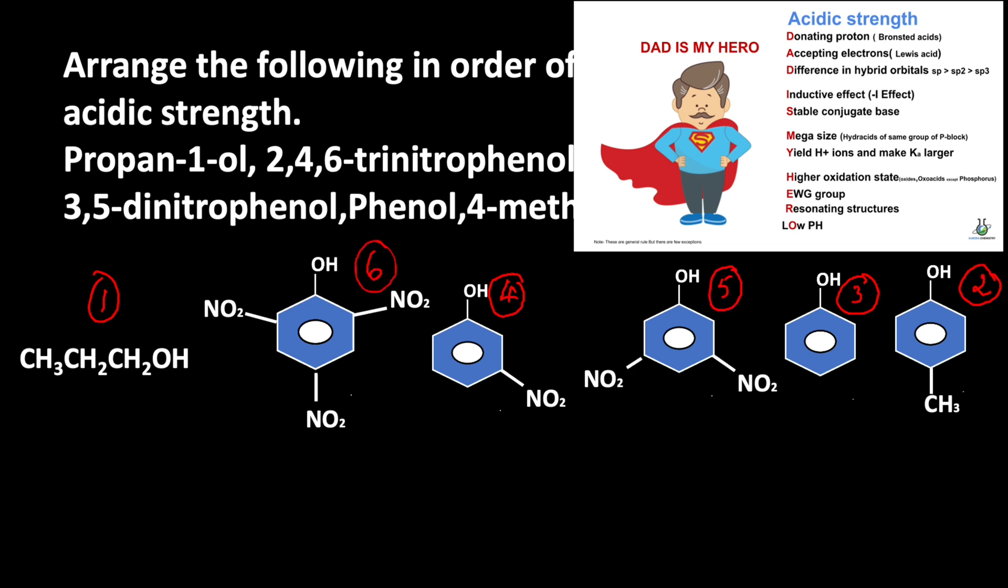Then after that we have di-substituted nitrophenol in the meta position. The highest acidic strength we can see in 2,4,6-trinitrophenol because the nitro group electron withdrawing group is present in ortho and para position.